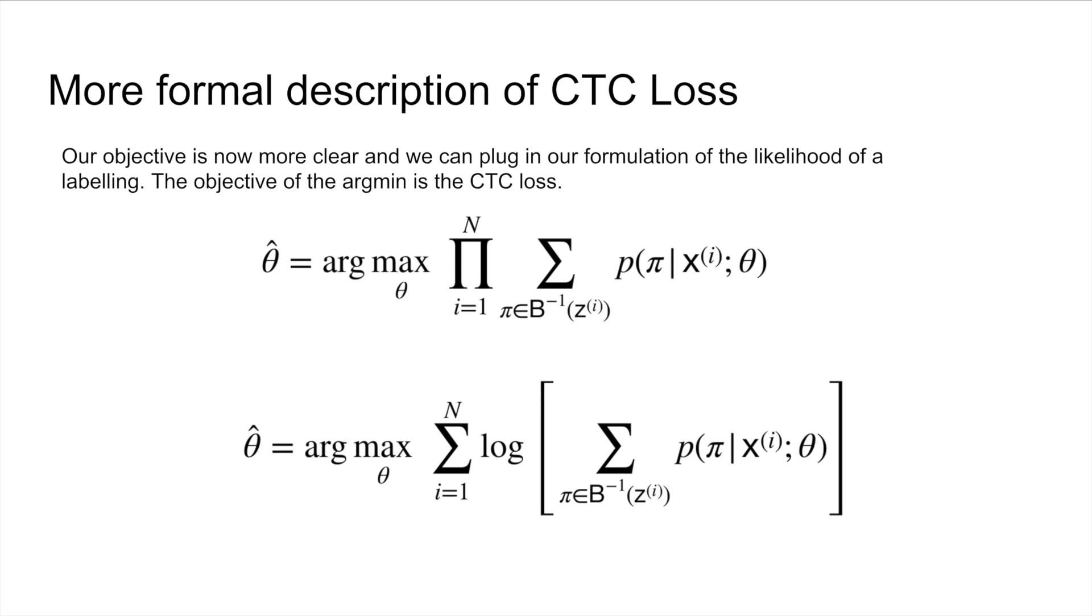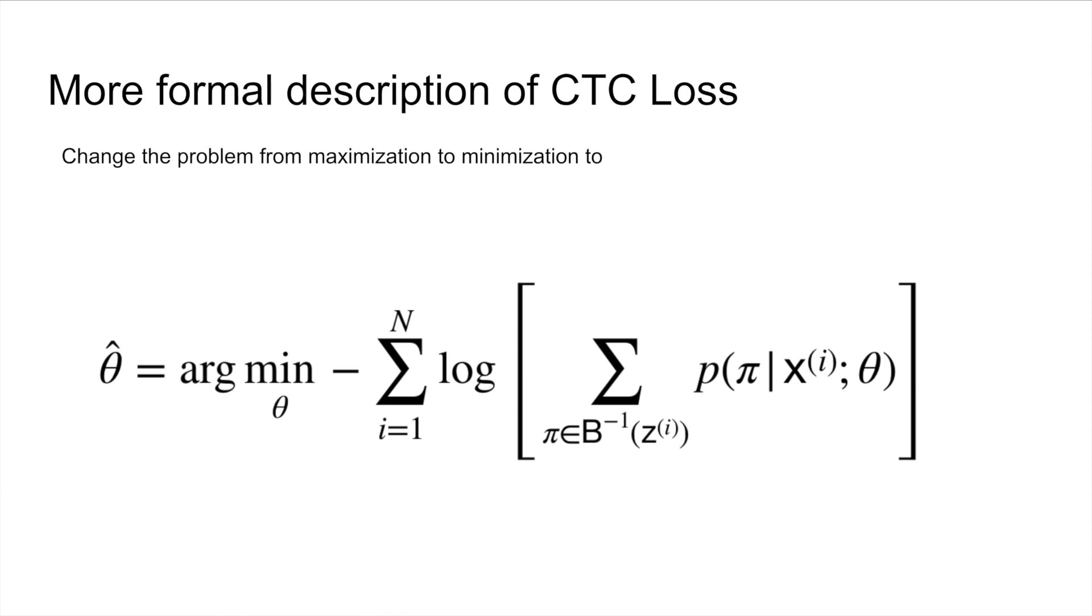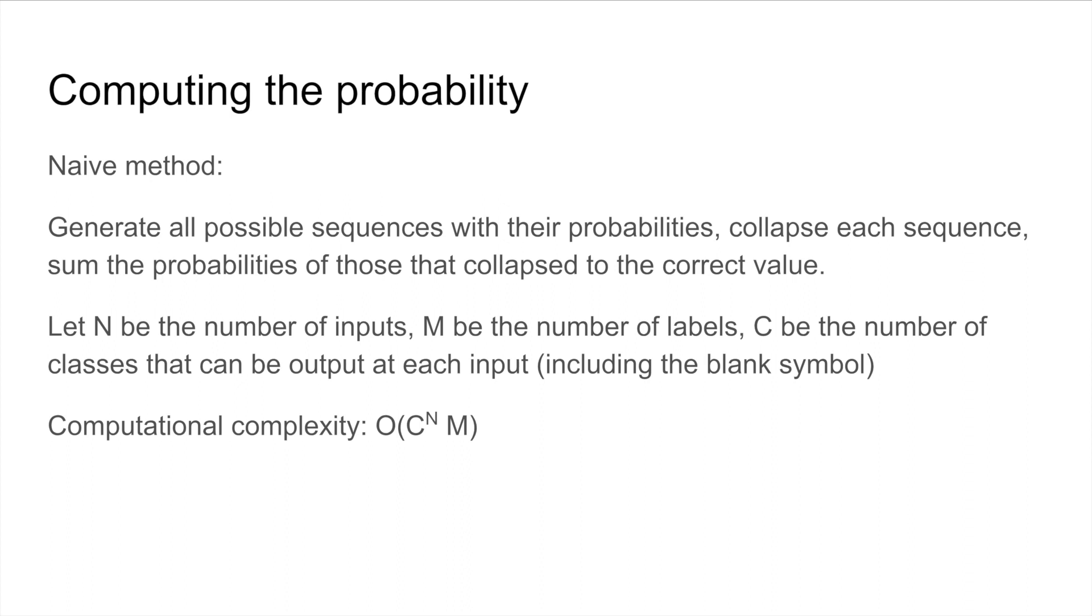So now we can put these all together, and we can plug in what we found for p of z, which is the sum over the probabilities of all the paths given the input sequence in our parameters to get our maximum likelihood parameter estimate. We can take the log, which results in a sum, and then finally, so this can work with our gradient descent optimizer, we just can take the negative of that, and now we're doing minimization here.